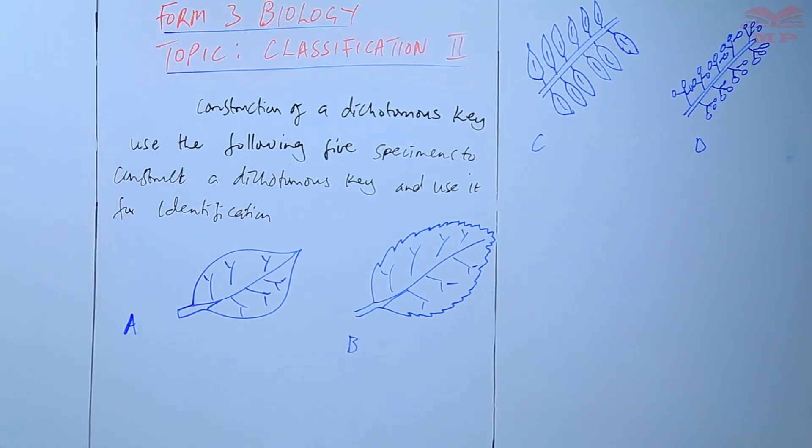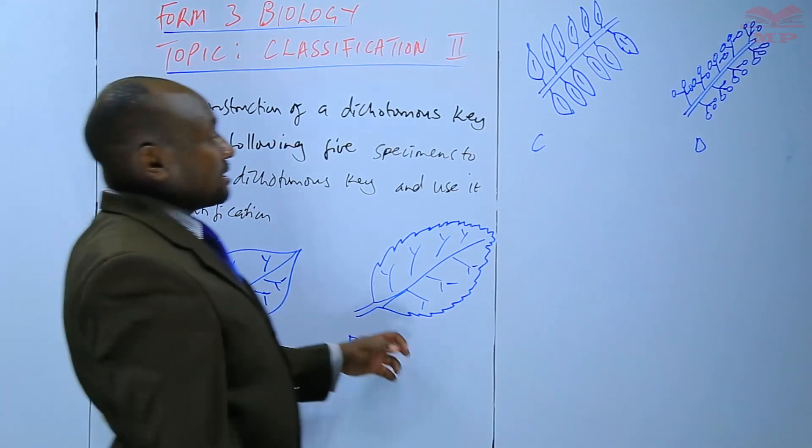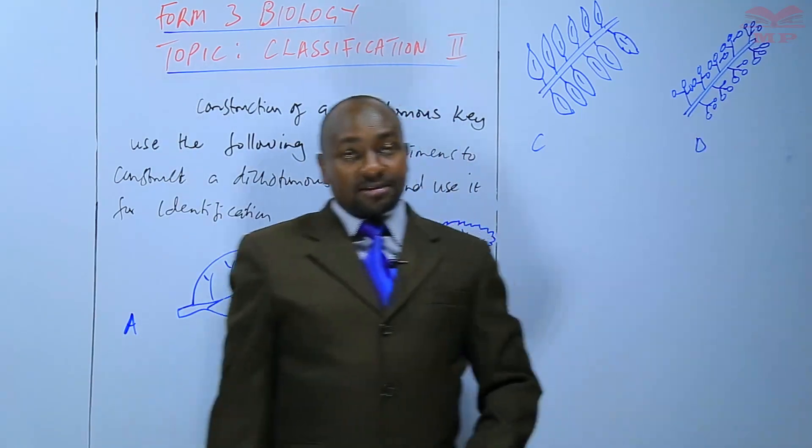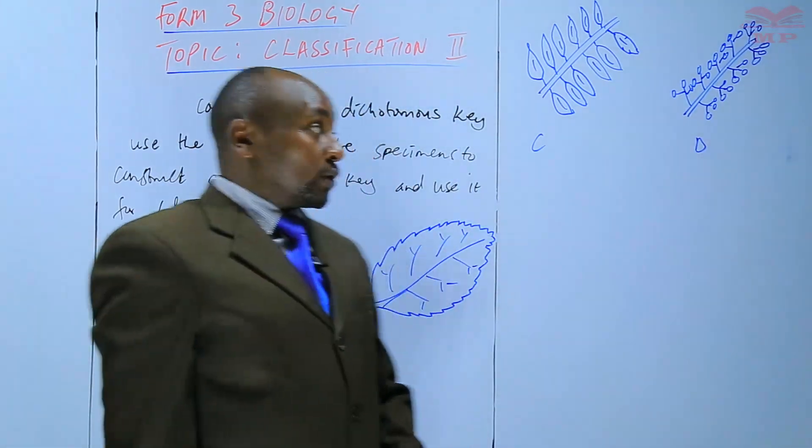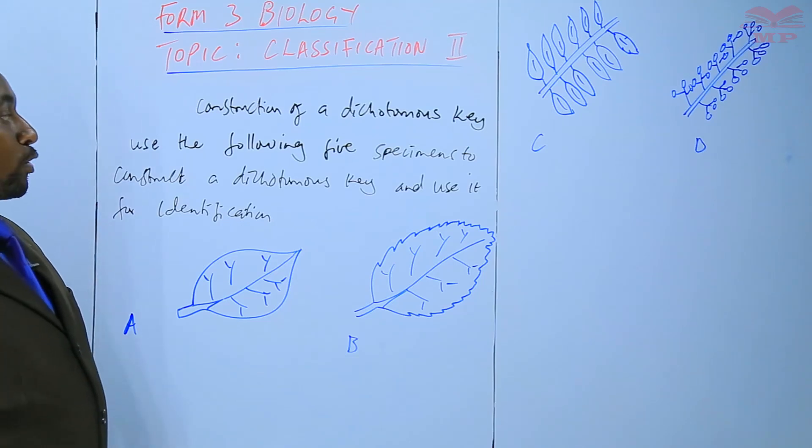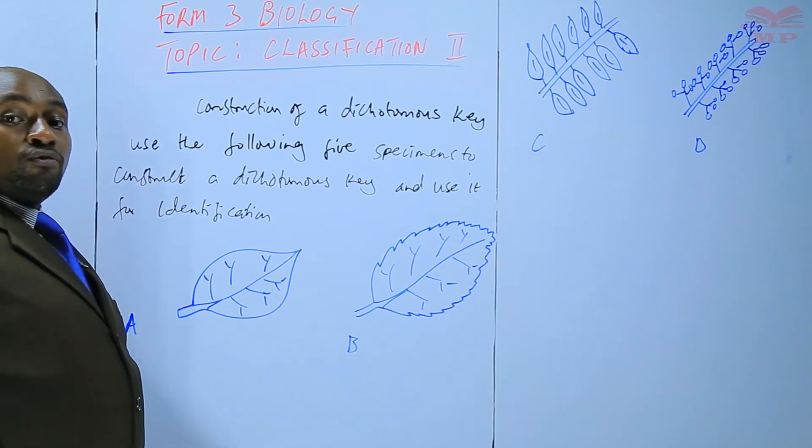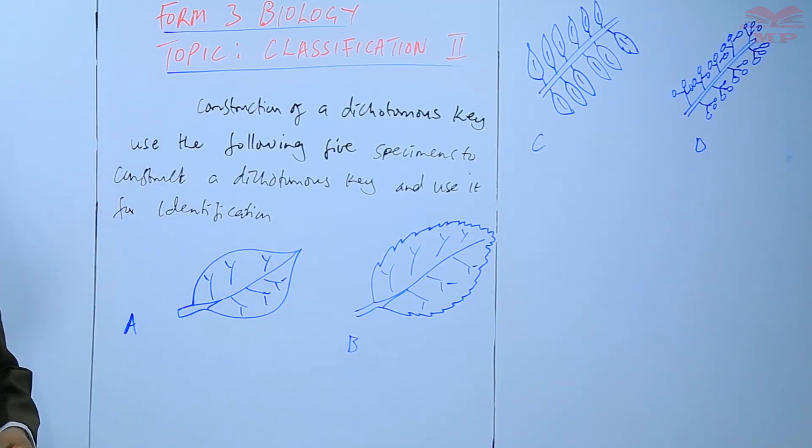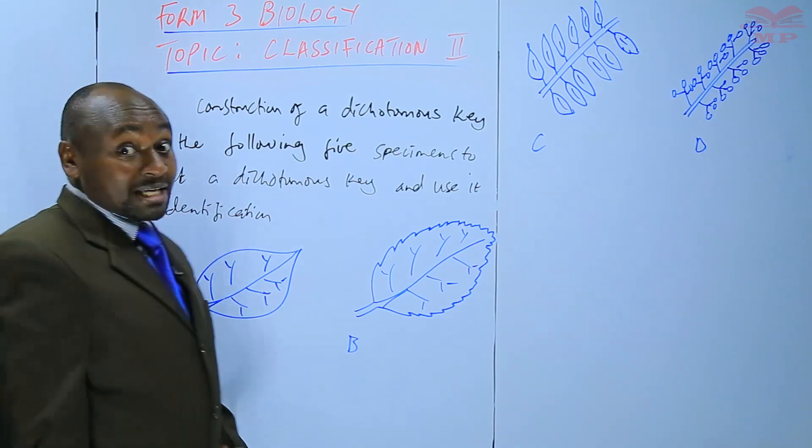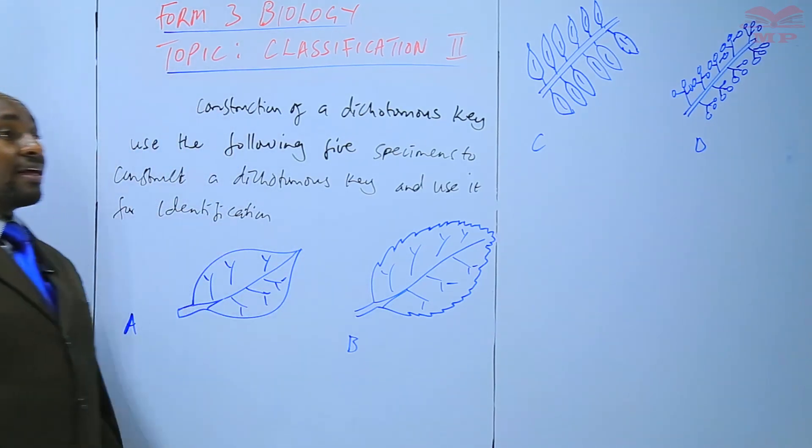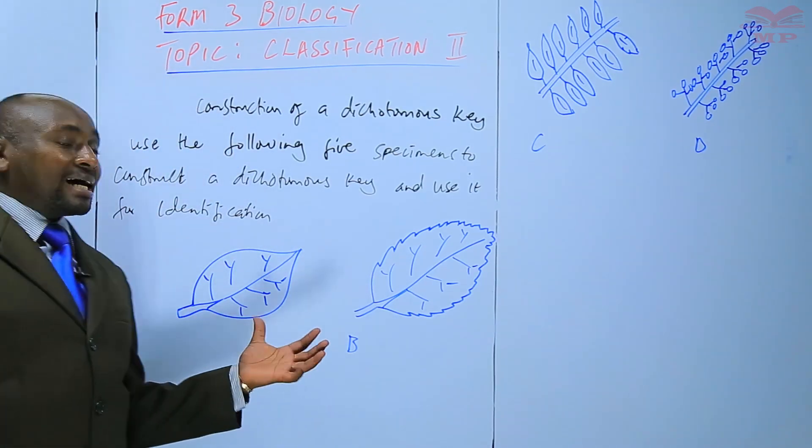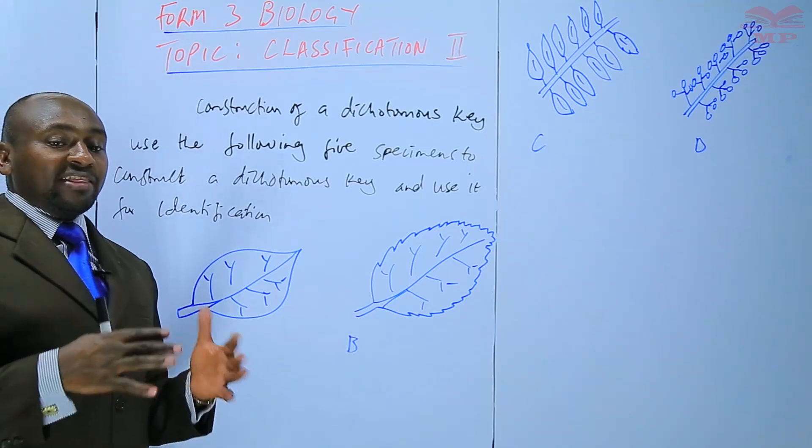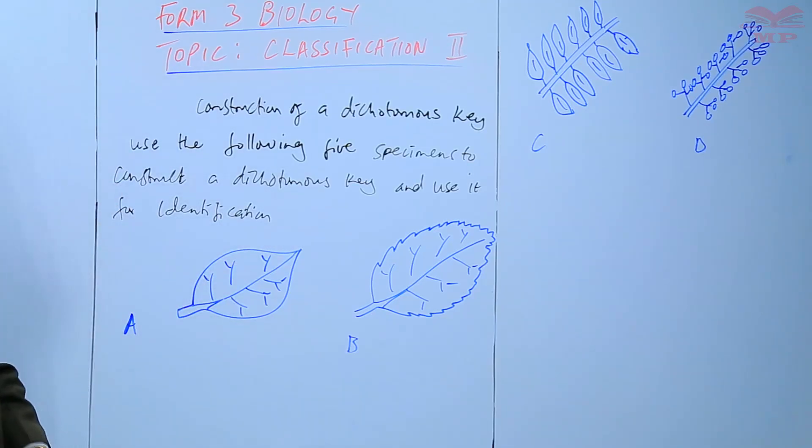From what we can see is that all these specimens are for leaves. In this case, when we are constructing the dichotomous scheme, we should look for those features in leaves that are observable first. Then we start with the ones that are more major, and then we can go down to the minor characteristics.